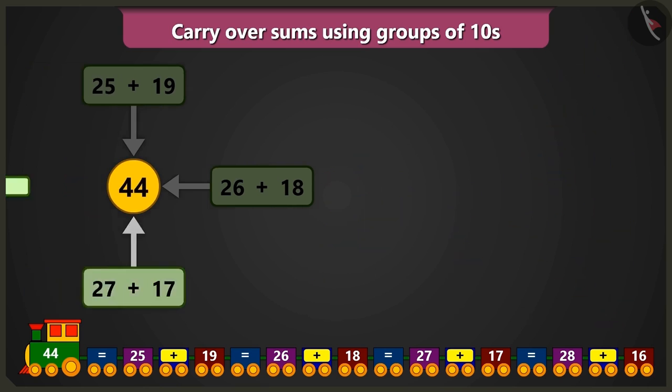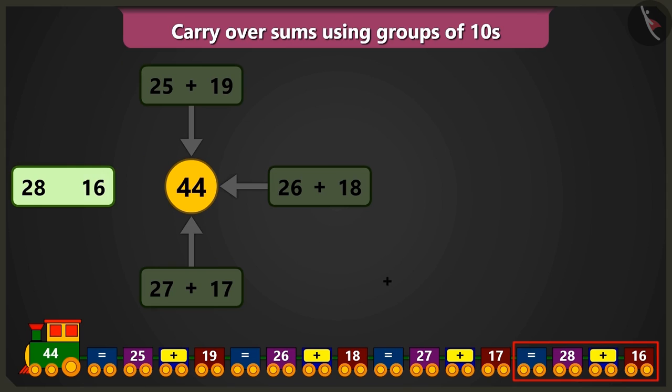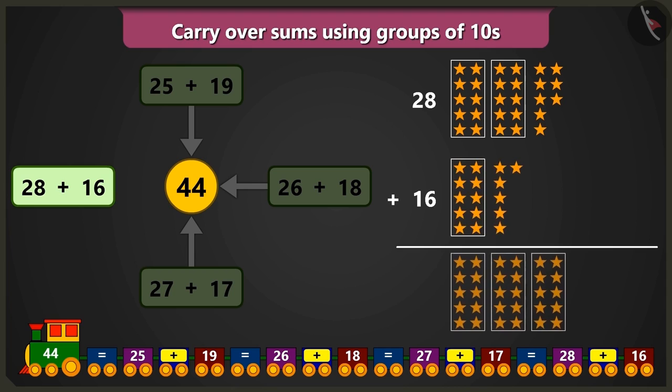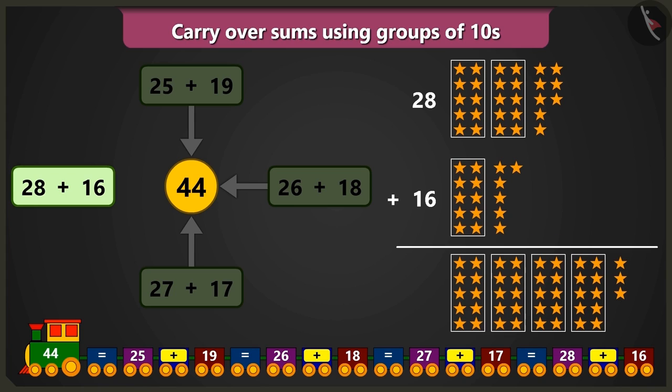Come on, Bubbly. Now, you tell me, what is the sum of 28 and 16? 28, that are 2 tens and 8 ones and 16, that are 1 tens and 6 ones. Now, we will add 8 ones to 6 ones. So count after 8 is 9, 10, 11, 12, 13 and 14.